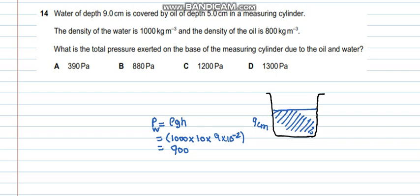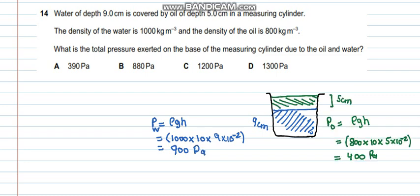So because of the water, the height is 9 cm. So rho GH, 1000 into 10 into 9 into 10⁻², it makes up 900 pascals. Now because of the oil, the density pressure is rho GH. The density is 800, the G value is 10 and the height is 5 cm. So 10⁻². So the pressure because of the oil is 400 pascals. Now what we need to do is just add these both pressures.